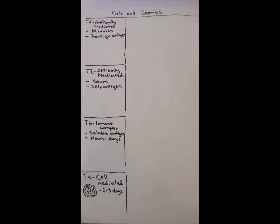Type 1 is antibody-mediated, with onset within minutes and acts to a foreign antigen. Type 2 is usually also antibody-mediated, with onset within hours and the antigen is usually a self-antigen. Type 3 is an immune complex reaction with onset within hours to days.